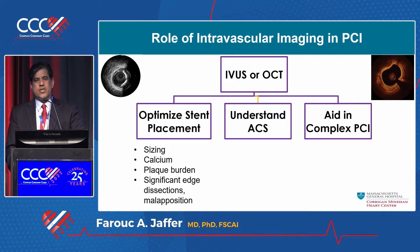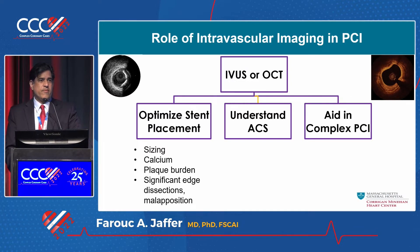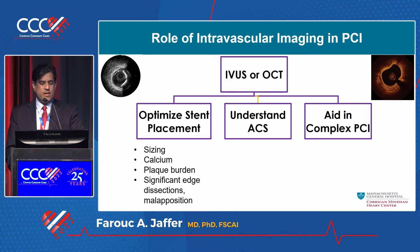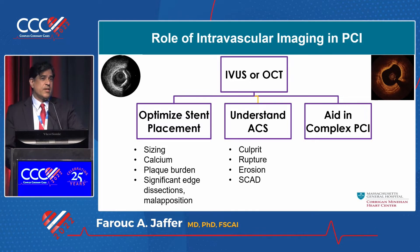For stent placement, our eyes are insufficient with angiography — both for diameter and length. Calcium is clearly underestimated by fluoroscopy, and plaque burden is missed. We know that ending stents in large areas of plaque leads to inferior outcomes. We cannot see this when we only look at the lumen — we need to look at the wall, and during PCI we need to understand significant edge dissections or malapposition.